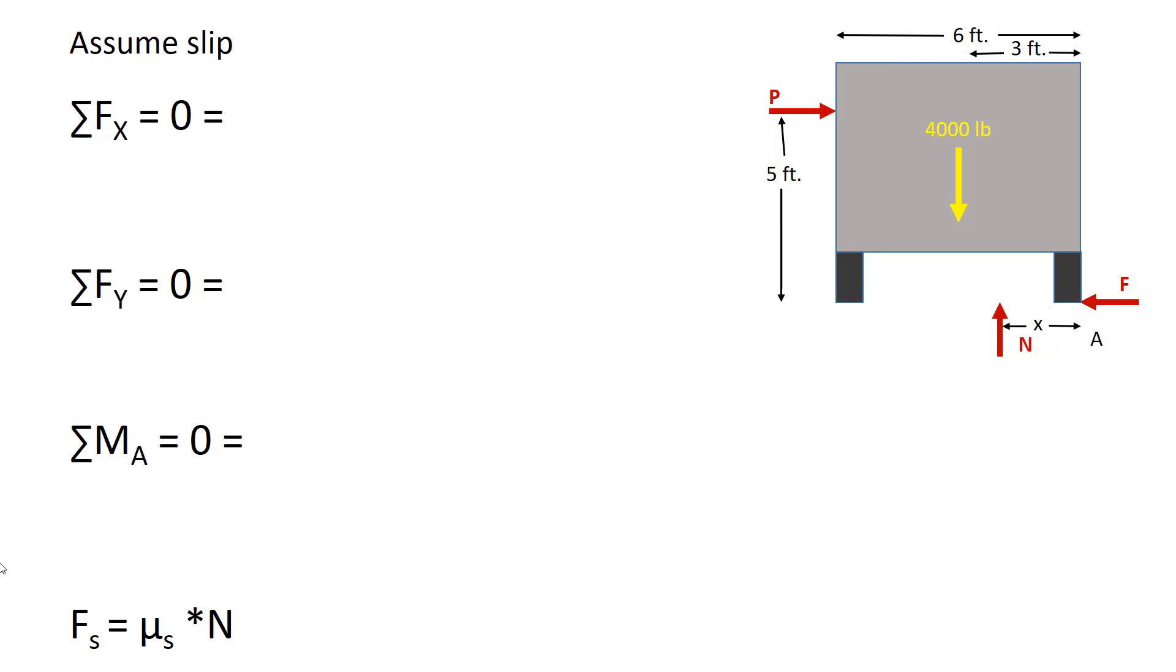As before, sum of the forces in the x direction equals zero, that's P minus F. And again, P is equal to F. And we're assuming that it's going to reach that static friction value. So I can take this equation and I have 0.7 times 4,000. And as before, I get the 2,800 pounds. So P equals F, which is equal to 2,800 pounds force. Sum of the forces in y equals zero. Again, it's N minus 4,000. And so N equals 4,000 pounds force, as before.